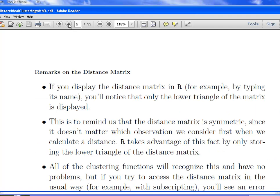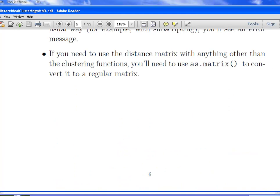If you display the distance matrix in R, for example, by typing its name, you will notice that only the lower triangle of the matrix is displayed. This is to remind us that the distance matrix is symmetric, since it doesn't matter which observation we consider first when we calculate distance. The distance from car 4 to car 5 is the same as the distance from car 5 to car 4. R takes advantage of this by storing only the lower triangle of the distance matrix. If you consider, you could have a thousand cases for a thousand cars, that means your distance matrix would be comprised of one thousand by one thousand cells, one million cells, so it's more to just save space. It does not create any issues though. You can reconstruct it as a matrix if you want.